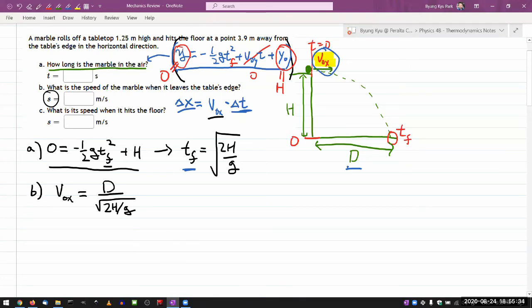And what is its speed when it hits the floor? That's where you kind of have to recall vector quality of movement. So you have, when it left the table's edge, this was the entire velocity. It only had the horizontal component. All right.